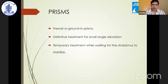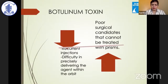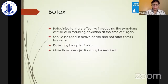Prisms can be a definitive treatment in small angles — both Fresnel or ground-in prisms — and can be tried in patients waiting for surgery. Botulinum toxin may require recurrent injections. Delivering the agent precisely within a very enlarged, inflamed orbit is difficult, but it can be a choice in poor surgical candidates who cannot be treated with prisms. Up to 5 units has been described, more than one injection is often required, and it is probably ineffective when muscles are already fibrotic.